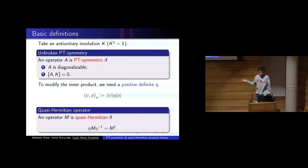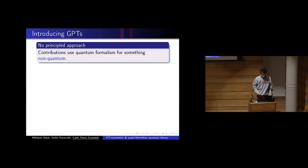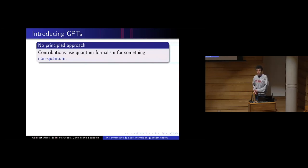Question about future targets for this principled approach: Krein spaces seem very complicated and their consistency is unclear, but they can probably be ruled out by some other principle. The difficulty is that they require an infinite dimensional description, while GPTs are typically studied in finite dimensional settings.